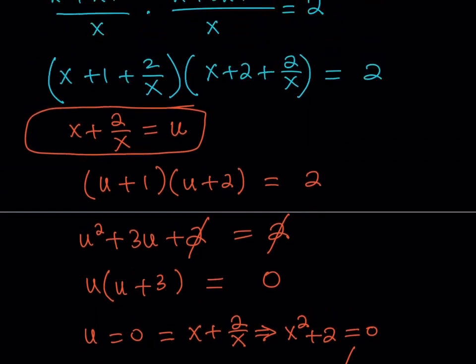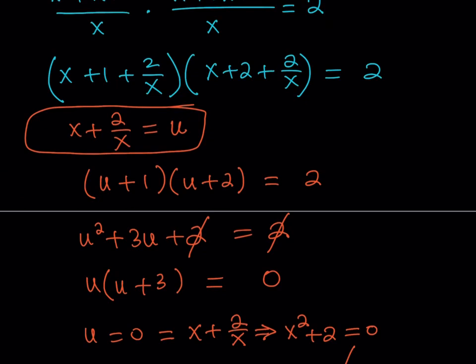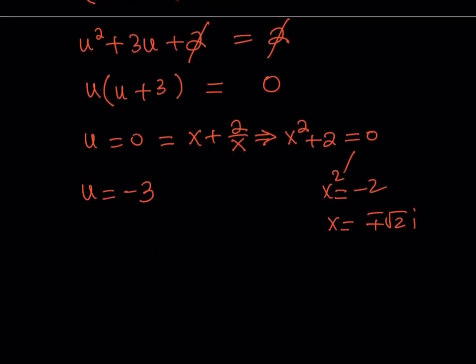They are complex solutions but we're interested in real solutions. So let's go for the real. Are there real solutions? Let's find out. So my next solution is going to be x plus 2 over x equals negative 3. Now we can multiply both sides by x again and that should give me x squared plus 2 is equal to negative 3x.